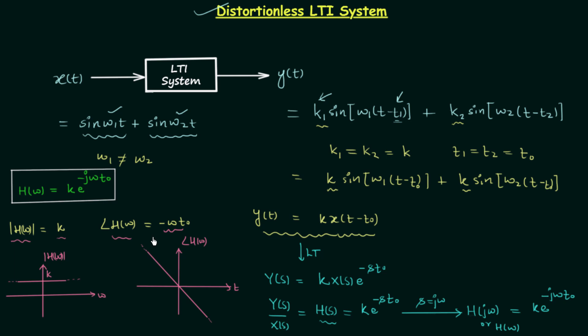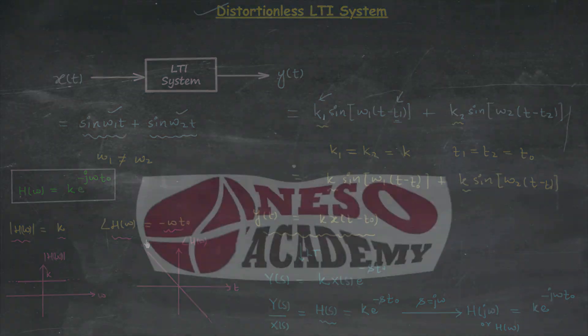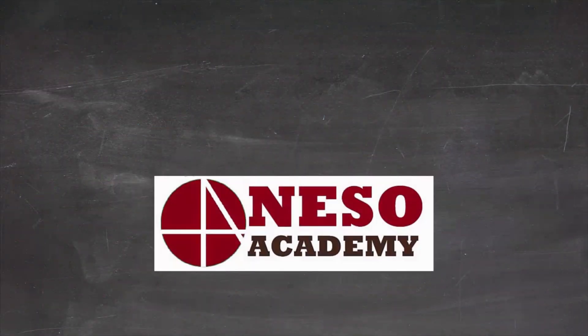It is very important, so remember the two conditions: the magnitude of the transfer function should be constant, and the phase should be linear. That is all for this lecture. If you have any doubt you may ask in the comment section. See you in the next one.